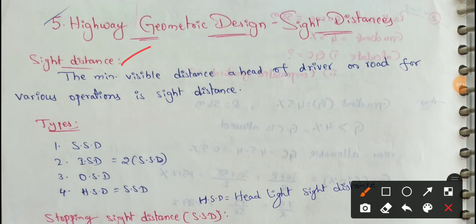Sight distance is the minimum visible distance ahead of driver on road for various operations.